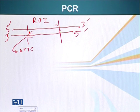So the sequence of this DNA is A, T, T, G, C, C. This arbitrary sequence. So when we design the primer we will make a complementary primer.